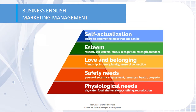Moving on, we have the esteem level, where we need respect from others, status, recognition, and freedom. And at the top of the pyramid we have self-actualization, which is related to the desire to become the most that one can be as a human being. This is the Maslow Pyramid.